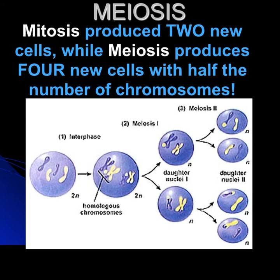Mitosis produces two new cells that are identical, while meiosis produces four new cells with half the number of chromosomes that the original cell had. Here we see on the far left four chromosomes — two homologous white ones and two homologous blue ones. By the time we're done with cell division, we end up with just two chromosomes in each cell.